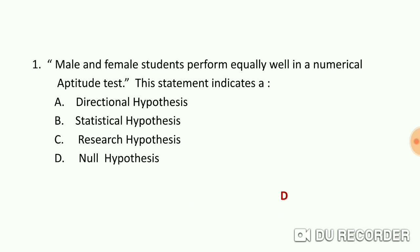And the answer is D. This statement is told that they perform equally well. We can very easily see that male and female students perform equally well. This means that the difference between them is zero. This statement is null hypothesis. The statement given belongs to null hypothesis.